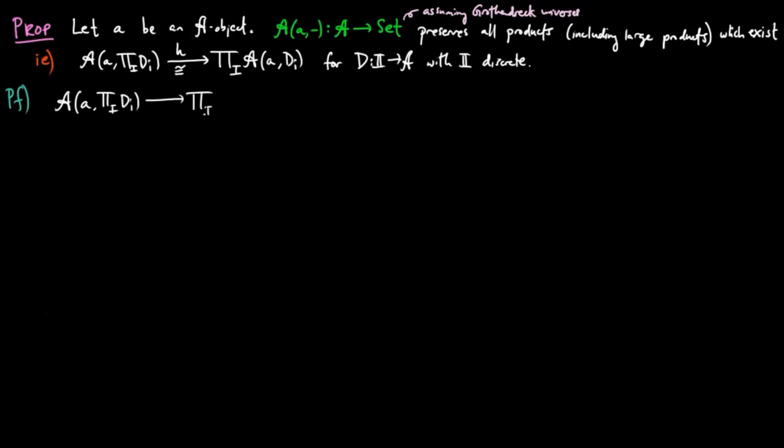this map H takes a morphism phi from little a to the product of d sub i to the i-tuple p sub i precomposed by phi in the set product, where p sub i is the projection from the product of d sub i to d sub i.